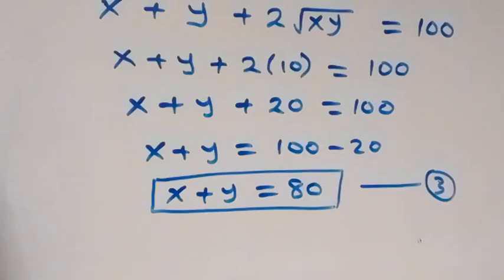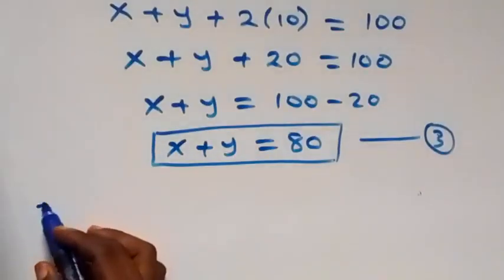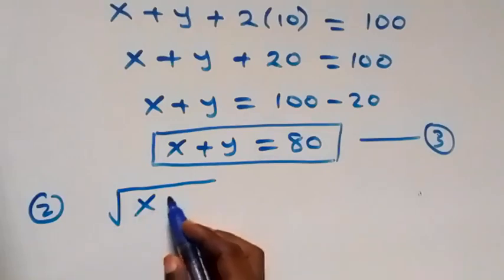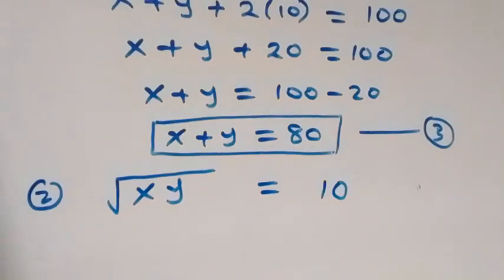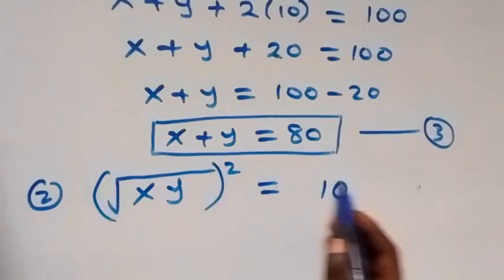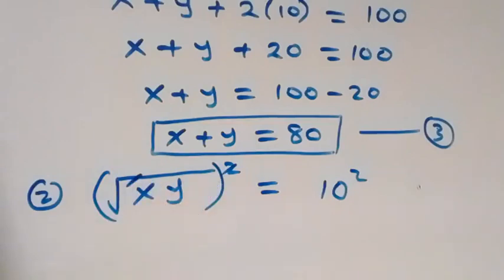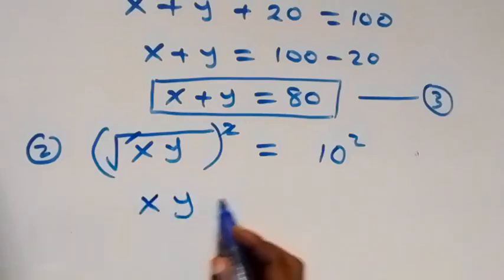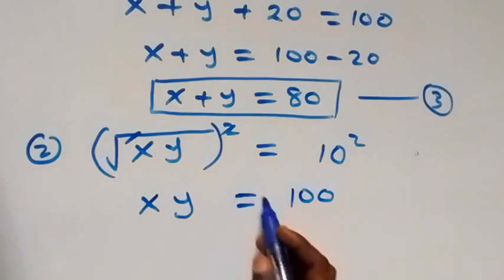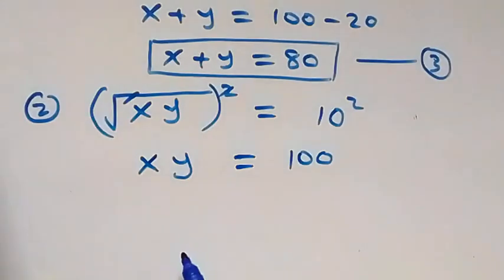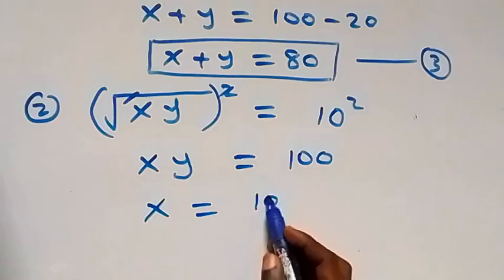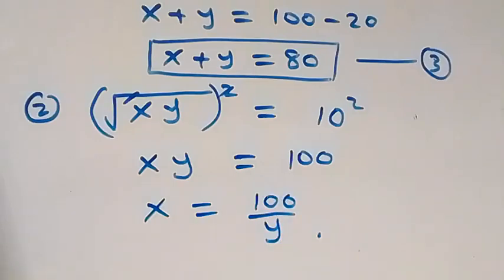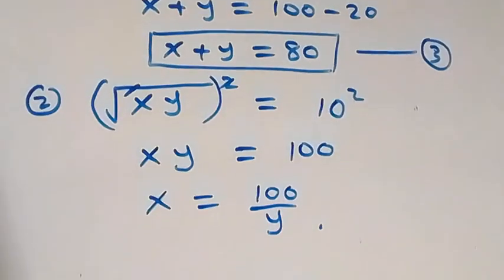Also from equation 2, √(xy) = 10. Let's square both sides — the square cancels the square root — giving us xy = 100. Making x the subject, we divide both sides by y, so x = 100/y.